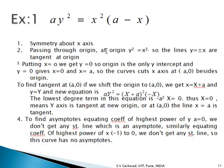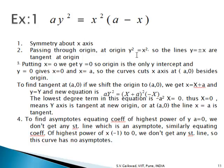The first example: ay² = x²(a − x), where a is always a positive constant. This curve is symmetric about the x-axis as powers of y are even. It passes through the origin as there is no constant term. The lowest degree terms give ay² = ax², so y² = x², meaning the two lines y = ±x are tangents at the origin.